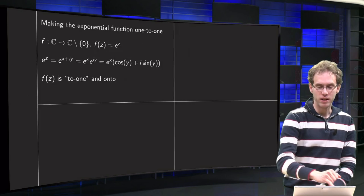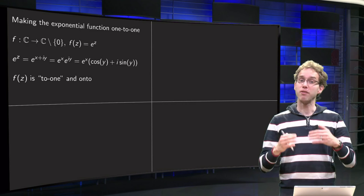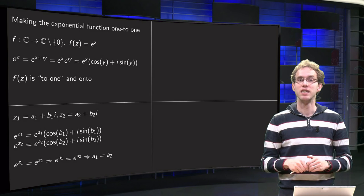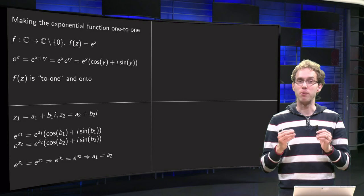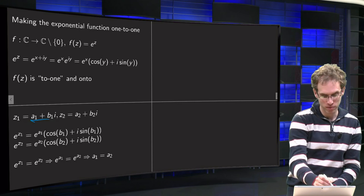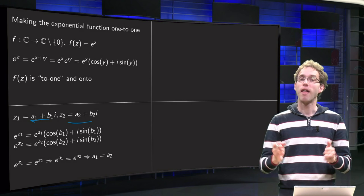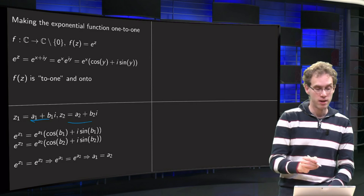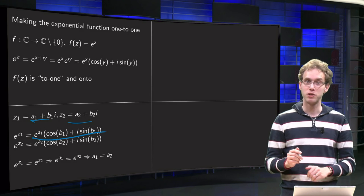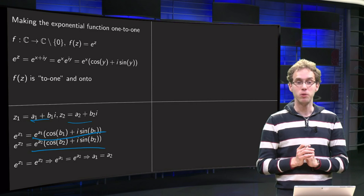How many points z are mapped to the same point in the range? If you have z₁ and z₂, when are they mapped to the same value e^z? Suppose z₁ = a₁ + b₁i and z₂ = a₂ + b₂i. Then e^(z₁) = e^(a₁)(cos b₁ + i sin b₁) and e^(z₂) = e^(a₂)(cos b₂ + i sin b₂). When are those image values the same?